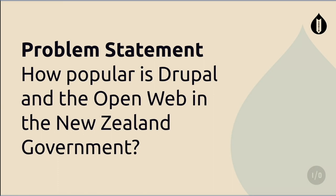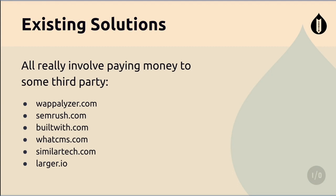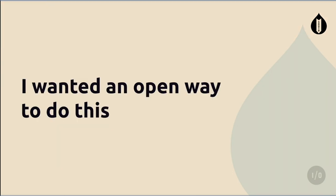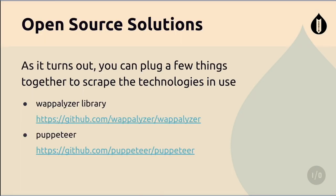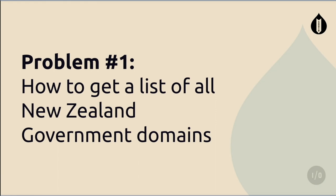The problem statement I'm here to answer is: how popular is Drupal and the open web in New Zealand? If you have money you can pay for services to find this out, but I'm a staunch open source advocate, so I needed a more transparent way. If you plug in Wappalizer — which uses Puppeteer, a Chrome orchestration engine — you can achieve various things.